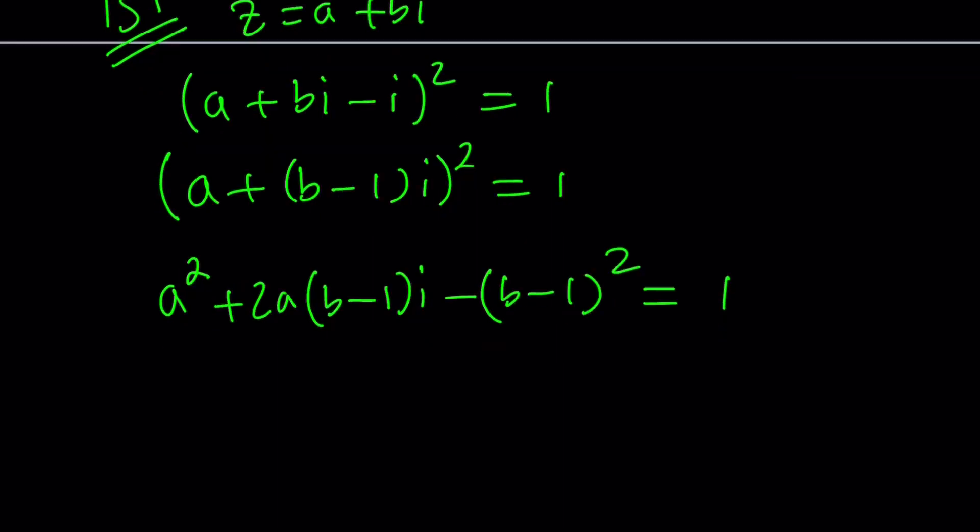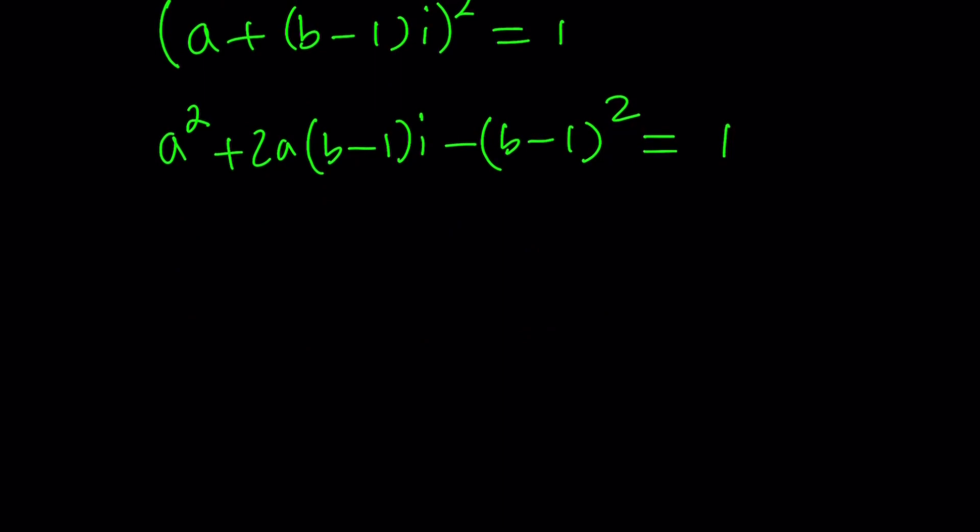So it's going to be minus (b-1)² because i² equals negative one. And this equals one. Now let's go ahead and put the real parts together. a² - (b-1)² + 2a(b-1)i and the whole thing equals one.